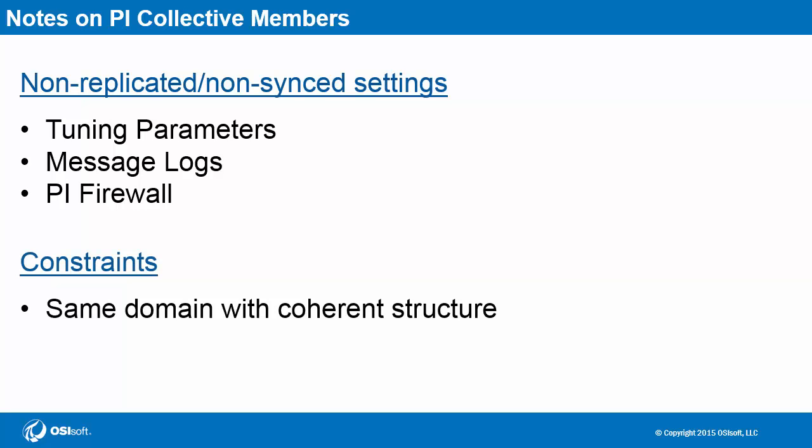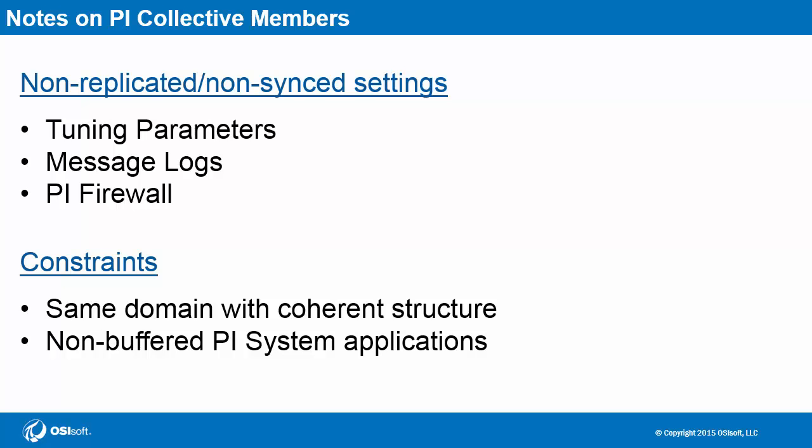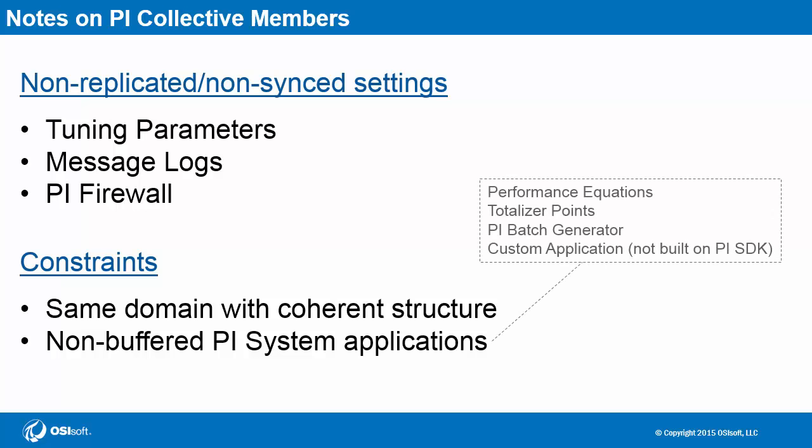Concerning some constraints, high availability within the PI system works best when all the components — including the server-side software, PI interfaces, and end users — are all contained within the same domain with a coherent structure, meaning a functioning domain controller with reliable DNS resolution. Also note that there are some PI system applications that cannot have their data buffered via the PI buffer subsystem. The consequence is that data won't go through n-way buffering and reach each member of a PI collective; rather, it gets sent to just a single server. These include performance equations, totalizer points, PI batch generator, and any custom manual data entry application that doesn't use the PI SDK. Some workarounds include using the PI to PI interface to send data from that single server to the other PI collective members, or just making sure that any end user who needs this data strictly connects to that single server.